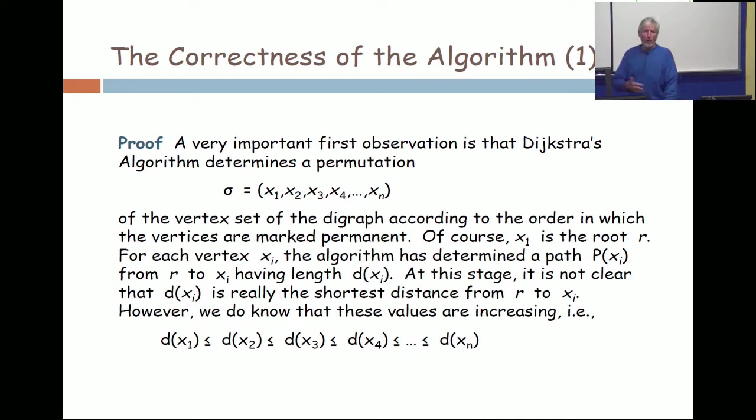Not the order 1 to n, but it says I'm going to make x1 permanent first, then x2, then x3, then x4, and then the last one, the last vertex made permanent.